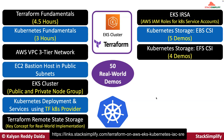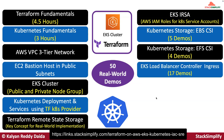And from there, we will move on to EFS CSI, which is Elastic File System CSI controller. Here we will implement four demos. And from there, we will move on to EKS load balancer controller, where we will implement 17 demos with ingress application load balancers and also Kubernetes service with network load balancers.